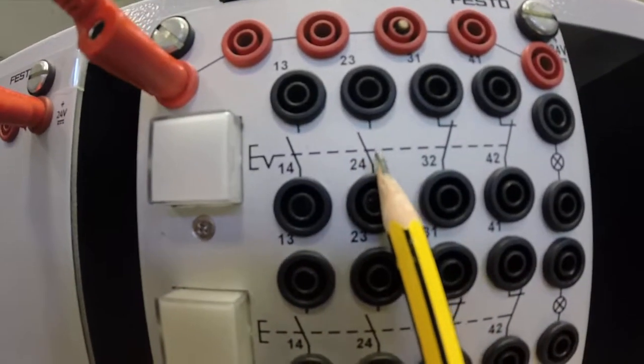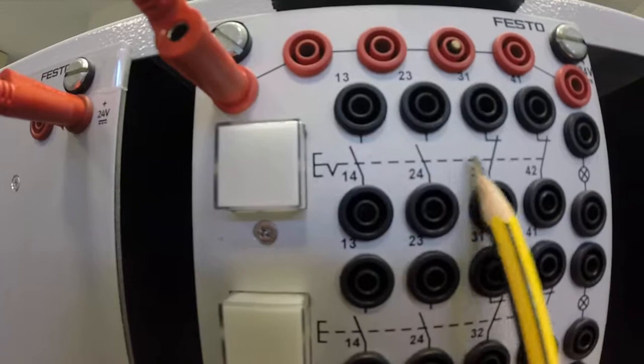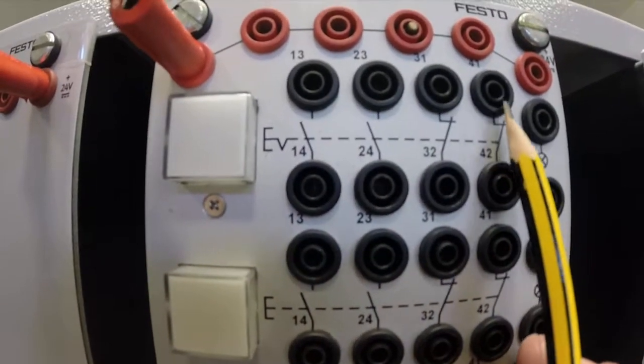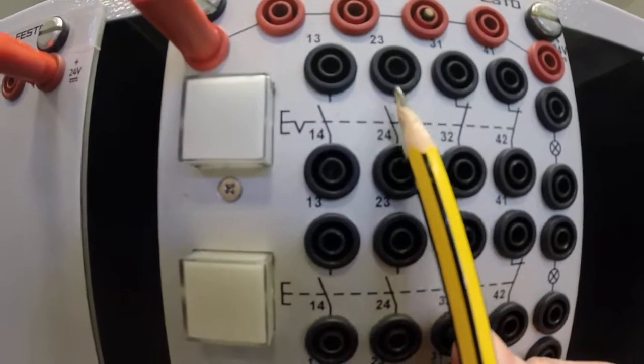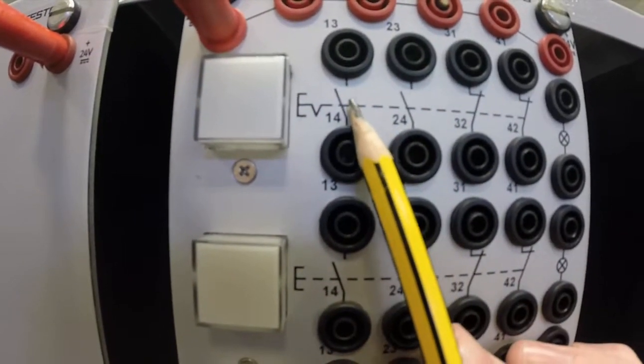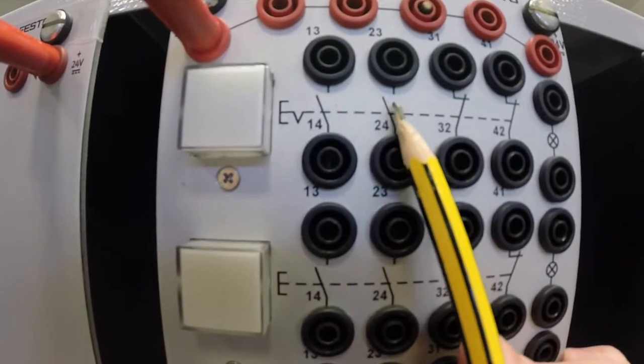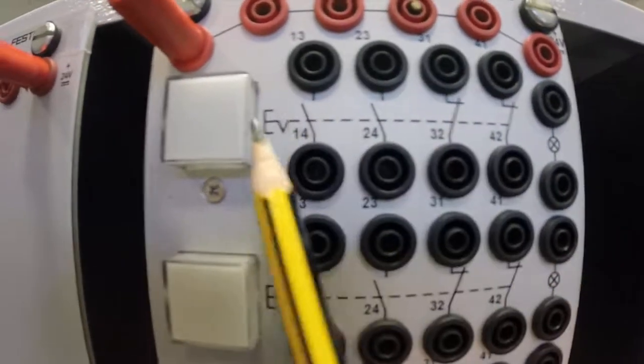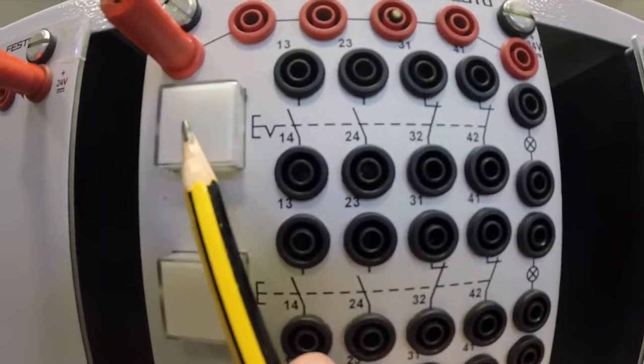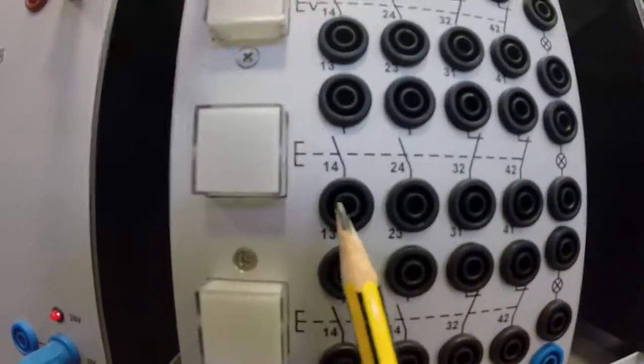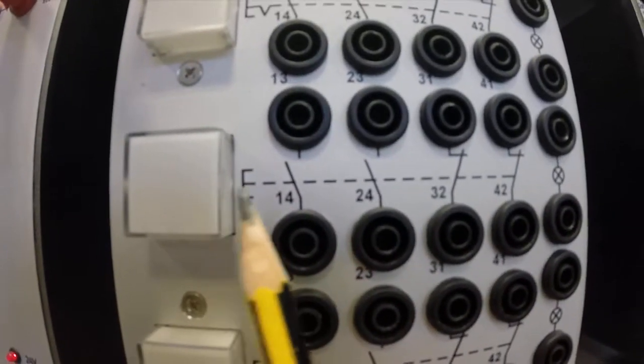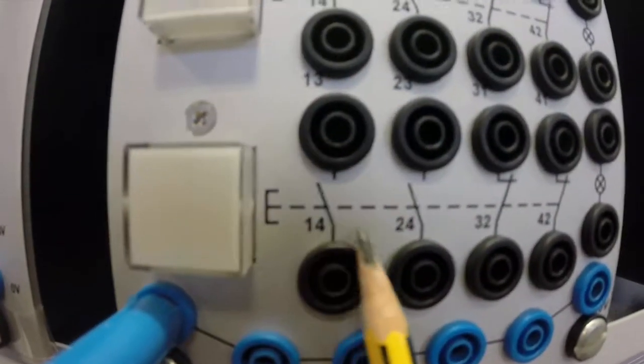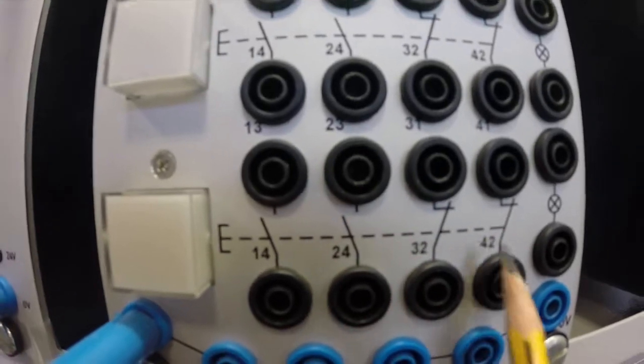This switch operates all these contacts. See the dash line? We've got four positions. We have two normally open positions and two normally closed positions that we can wire this switch in. That is the same for the switch down here. Two normally open, two normally closed.